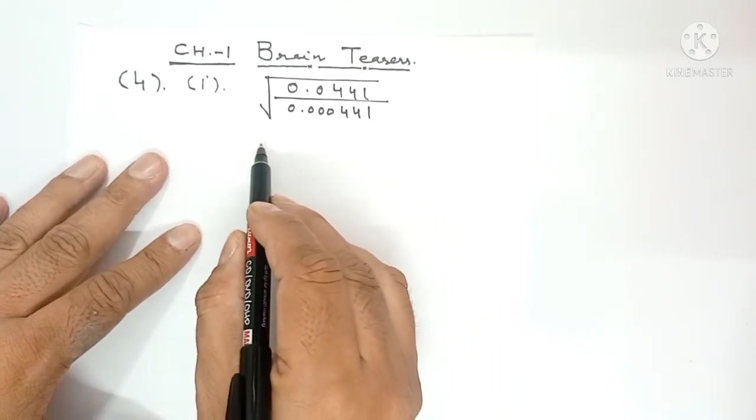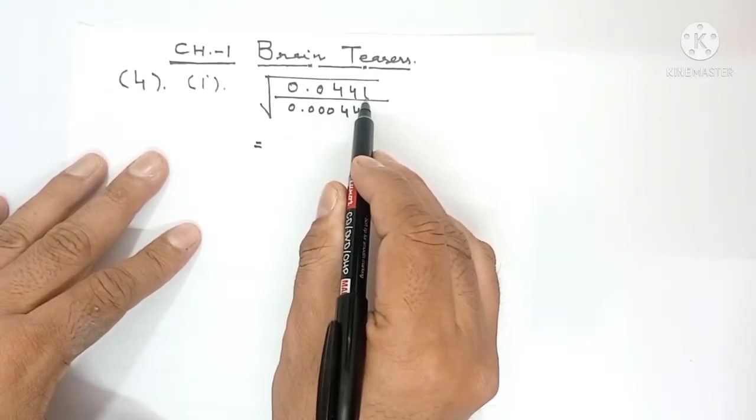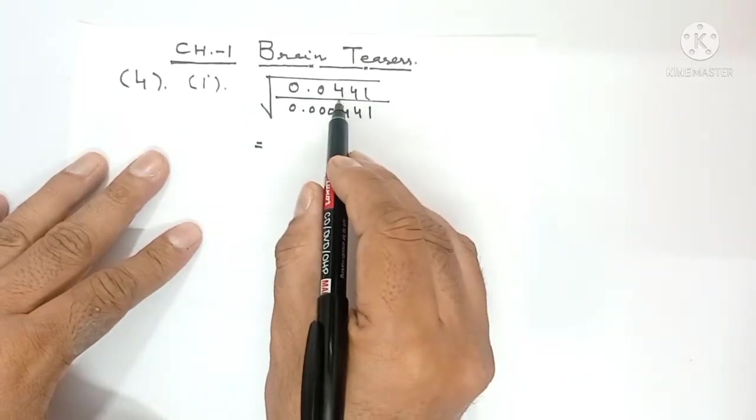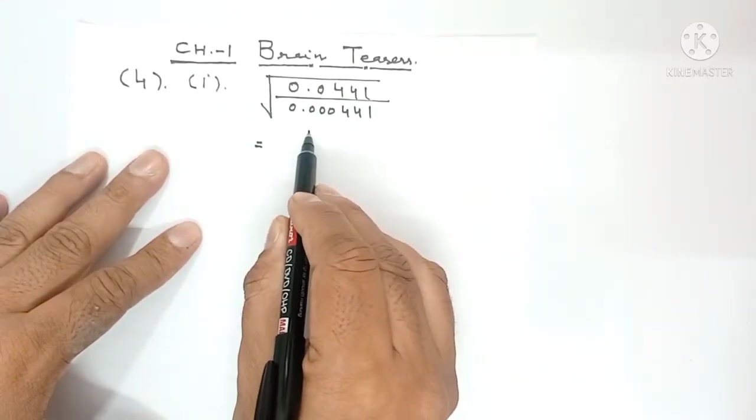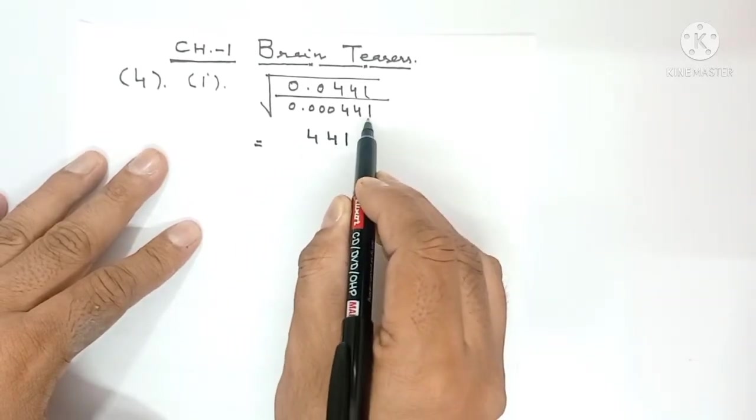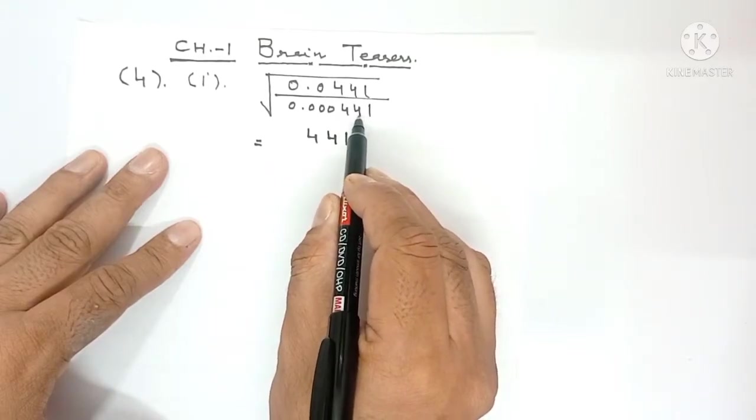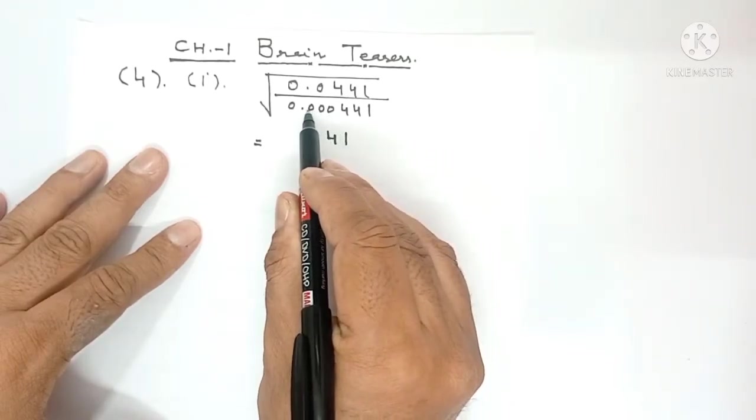Now what do you need to do? First of all, in the numerator, the main number is 441. Now count the decimal places: 1, 2, 3, 4, 5, 6.